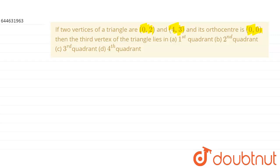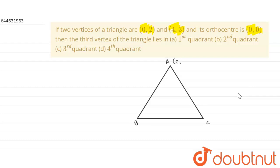For this, first of all we will draw the triangle. Let this is the triangle, and this point is A, this point is B, and let this point is C. Let A is (0,2), B is (4,3), and let C be some point (H, K).